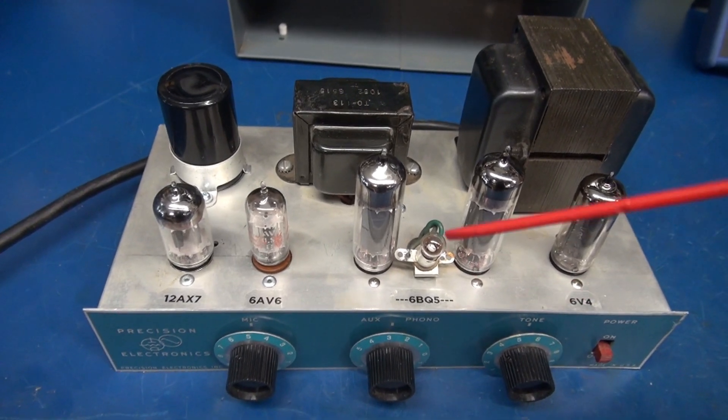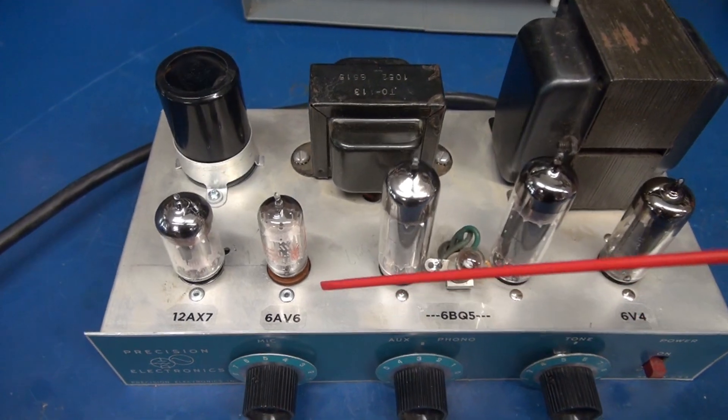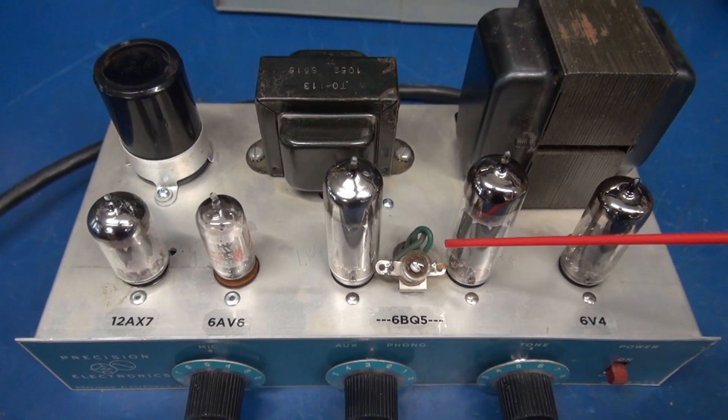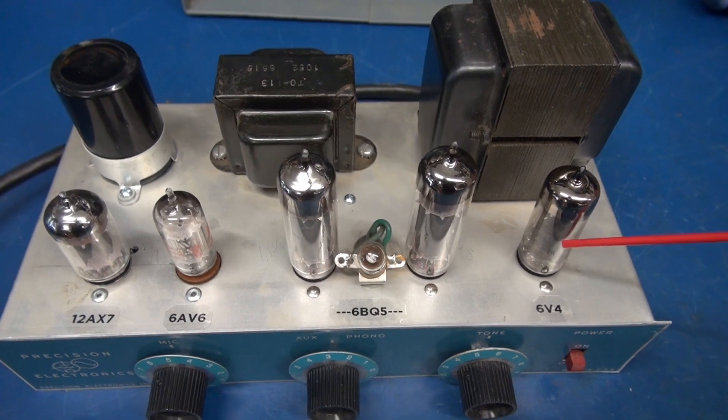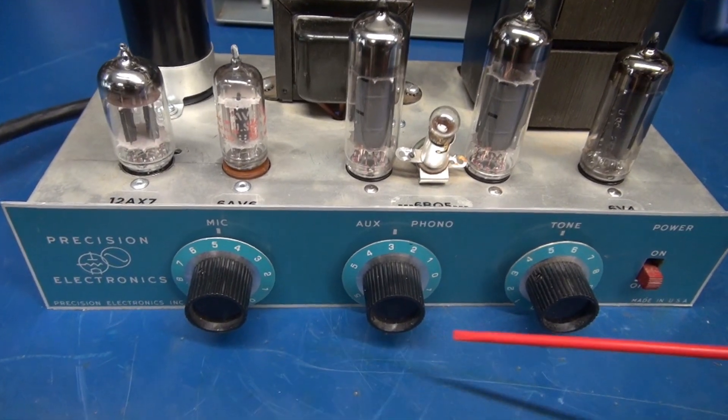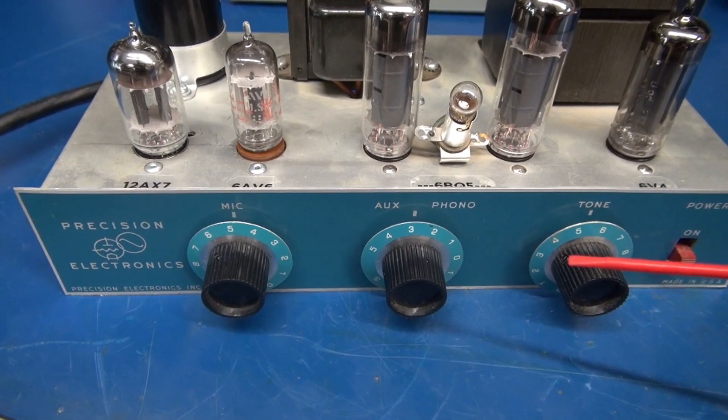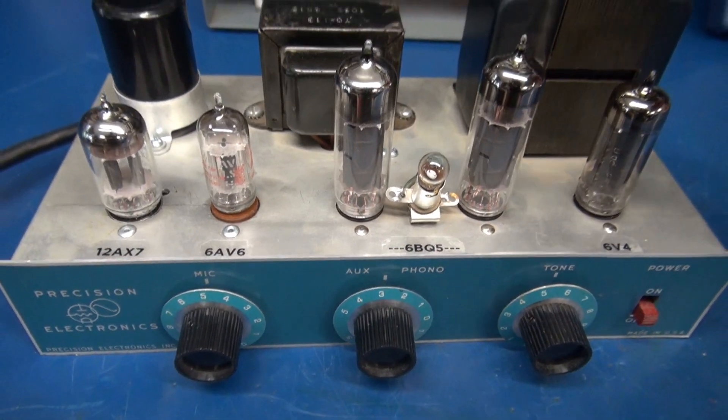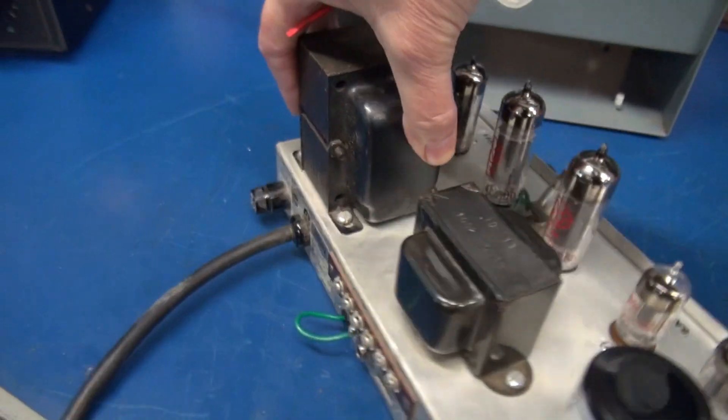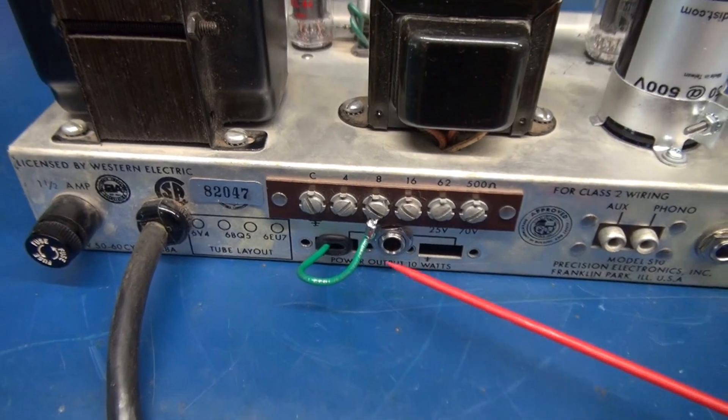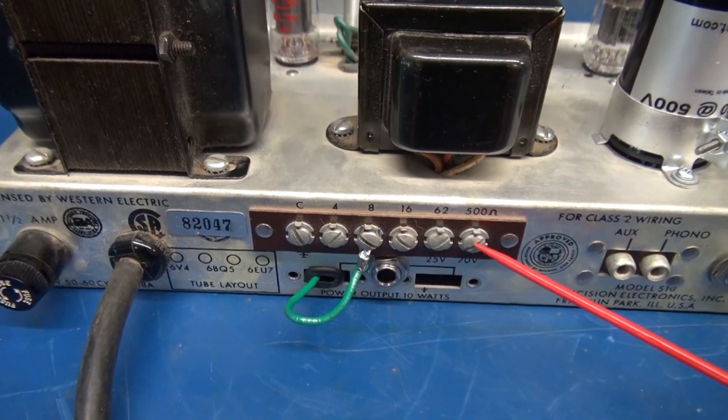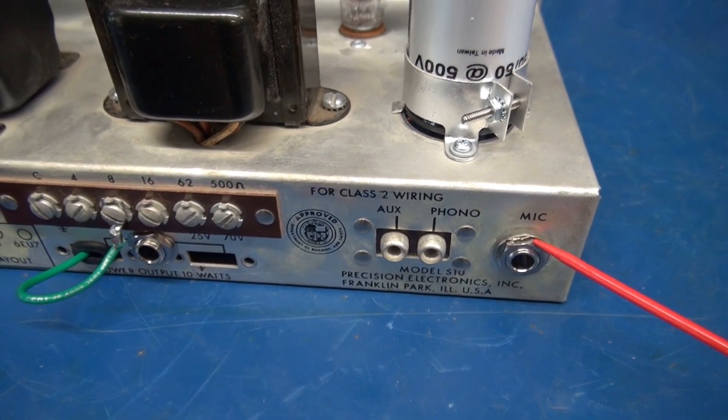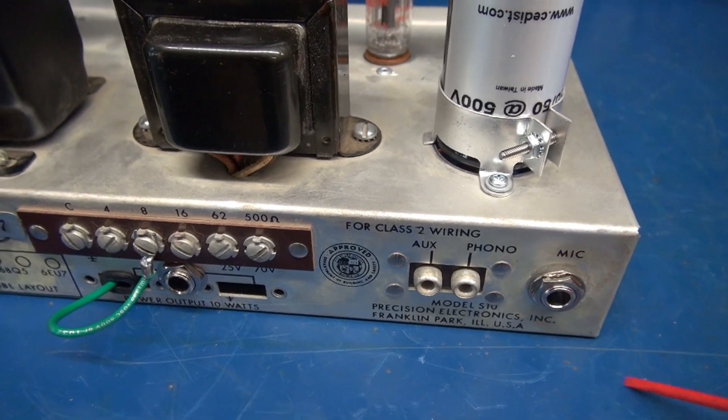New tube lineup. We have a 12AX7 preamp, 6AV6 inverter driving a pair of 6BQ5s, still using the original 6V4 rectifier. The control pots have been replaced, and there's quite the story behind that. New control lineup is volume, treble, bass. Let's take a look around the back. I added a speaker jack, and the jumper for selection of impedance is still operational. That old microphone input jack has been replaced with a quarter-inch type to plug your guitar in with.